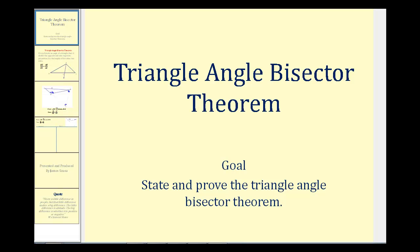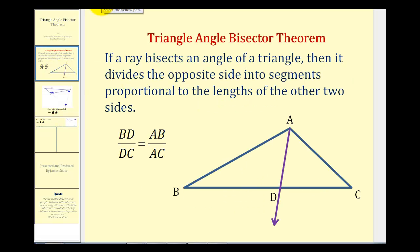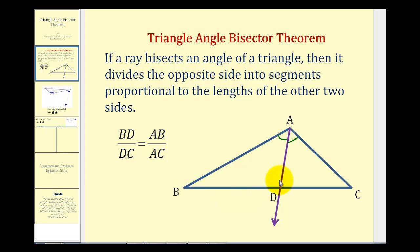Welcome to a lesson on the triangle angle bisector theorem. The goal of this video is to state and prove this theorem. The triangle angle bisector theorem states that if a ray bisects an angle of a triangle, meaning this angle here is congruent to this angle here, then it divides the opposite side into segments proportional to the lengths of the other two sides. So the ratio of BD to DC will equal the ratio of AB to AC.